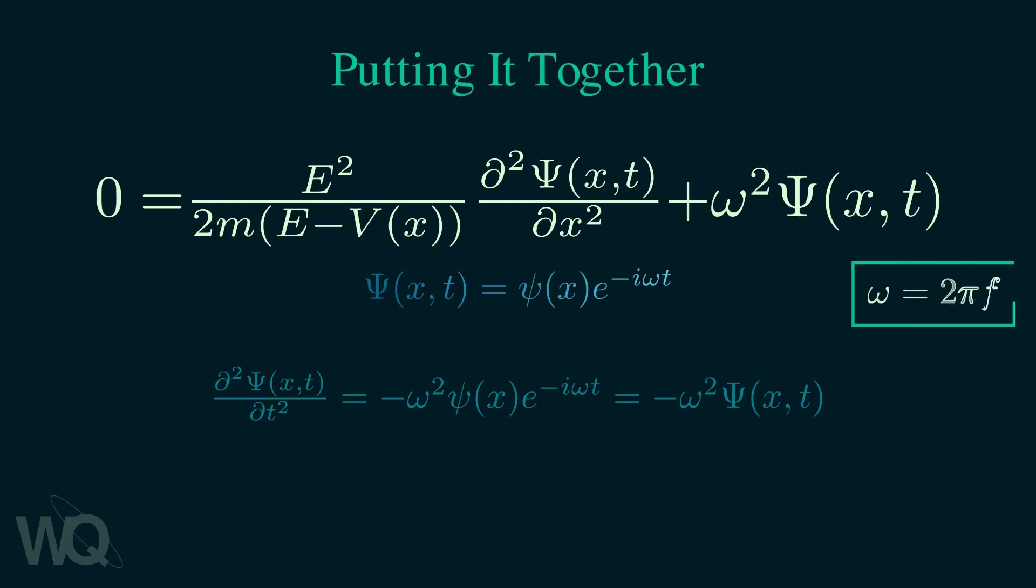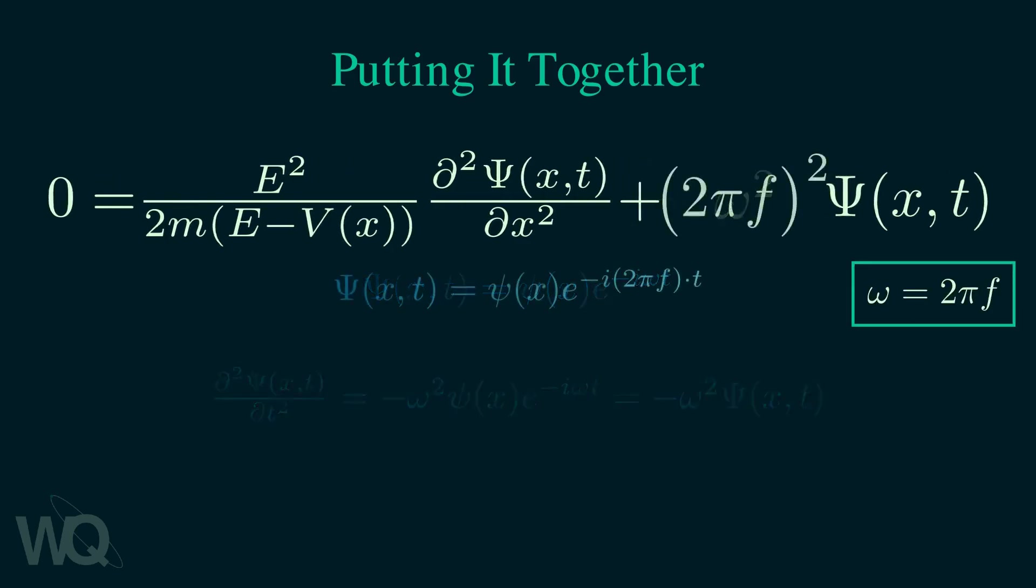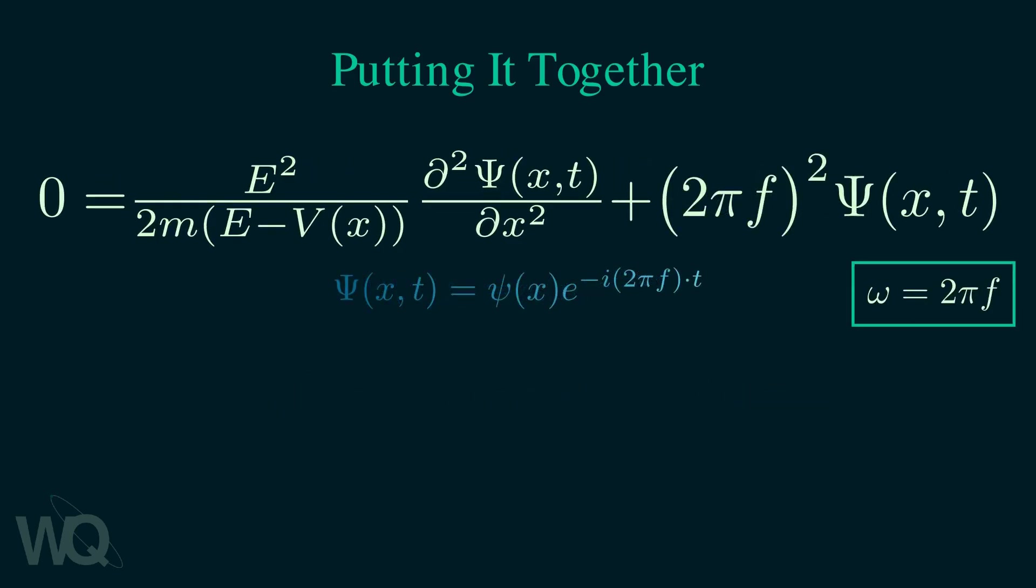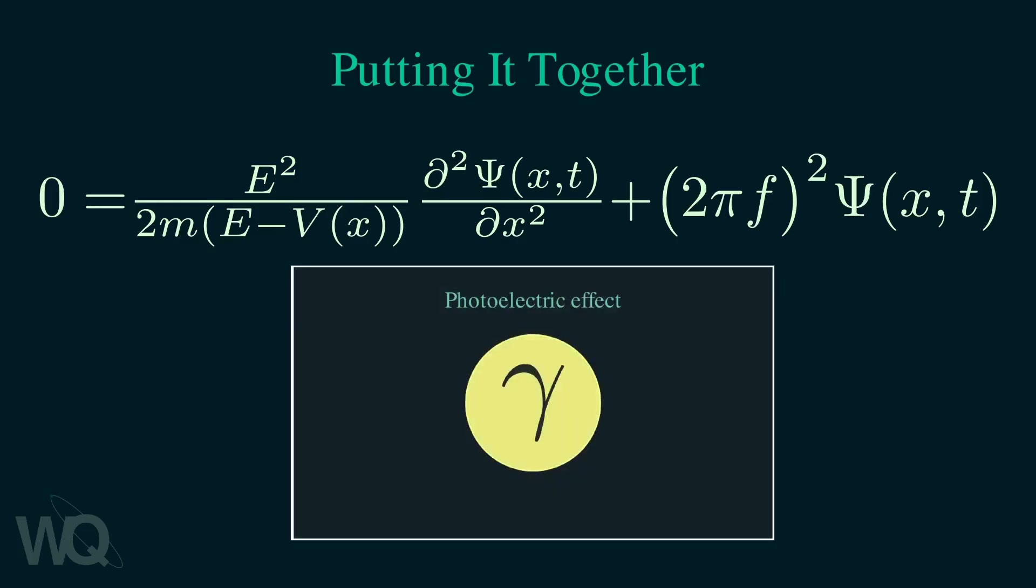Using the relation between frequency and angular frequency, we can write it as so. But what is the frequency then? To find the frequency, we have to go all the way back to the beginning of the video and remember what Einstein said. That the energy of a particle is proportional to the frequency. Thus, the frequency f is equal to E over h.